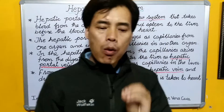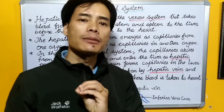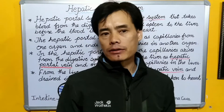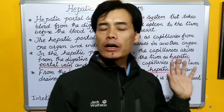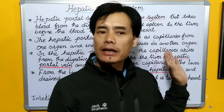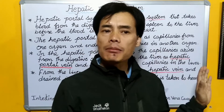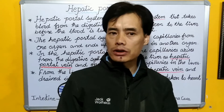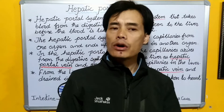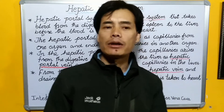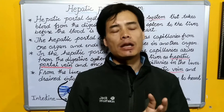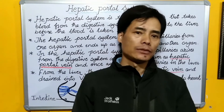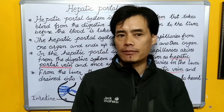The portal system is of different kinds. The one we are going to study is known as the hepatic portal system. But along with these, there are other portal systems also. For example, the hypophysial portal system, which is found in the nervous system.